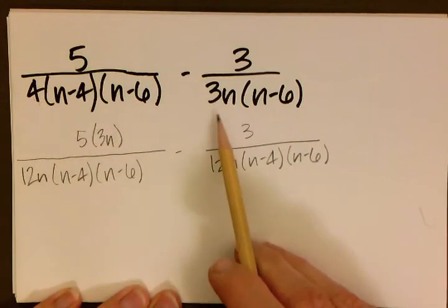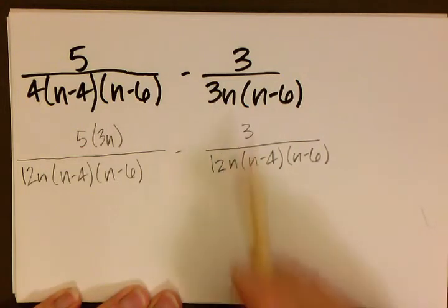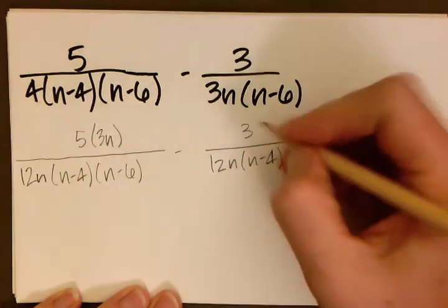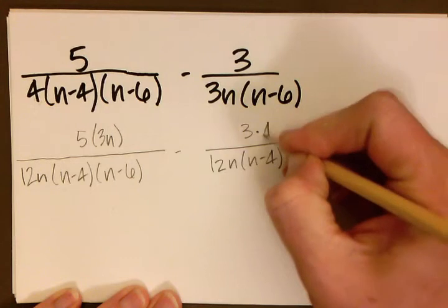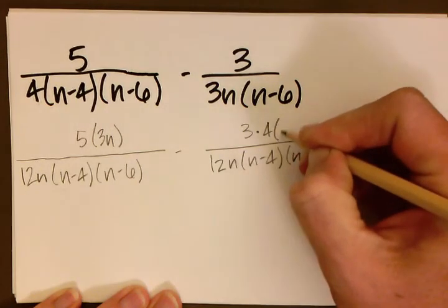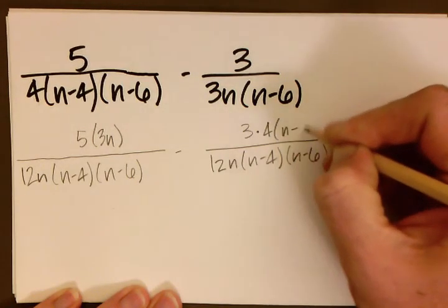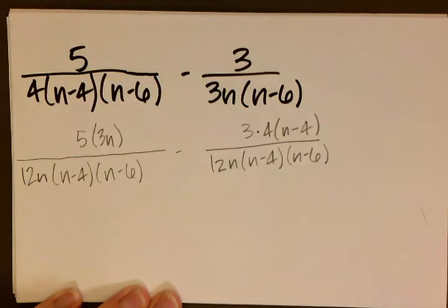Same question for our second fraction. What did we have to multiply our denominator by to get that common denominator? The answer this time was 4 times n minus 4. So now we've multiplied each denominator and each numerator by the exact same term.